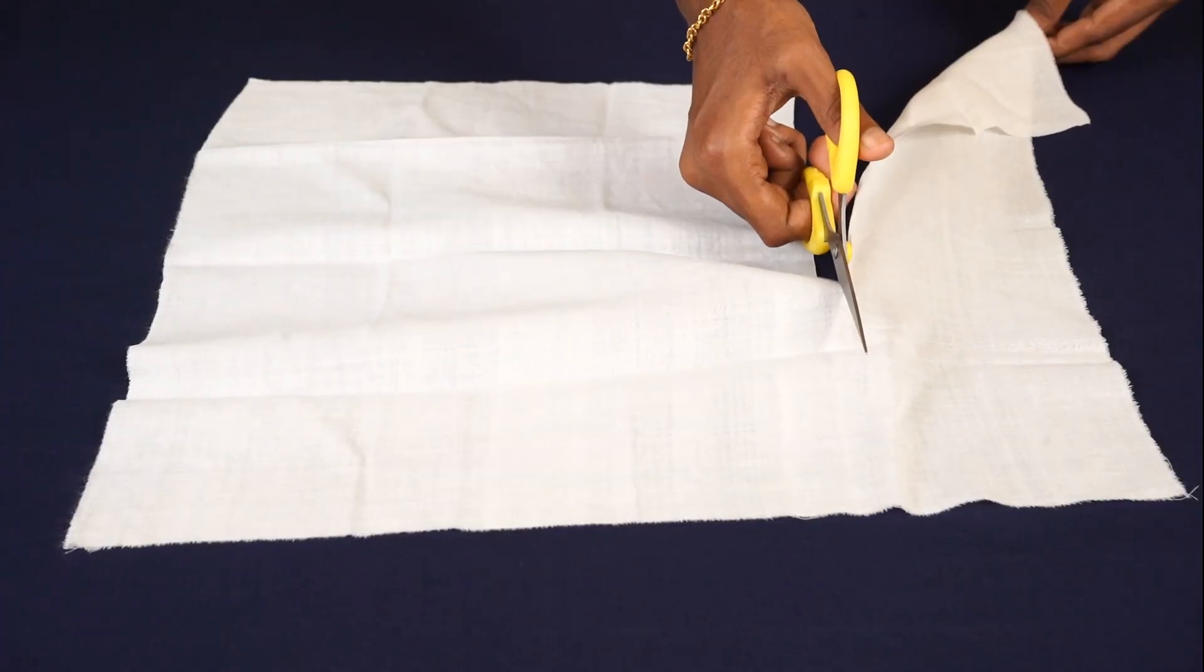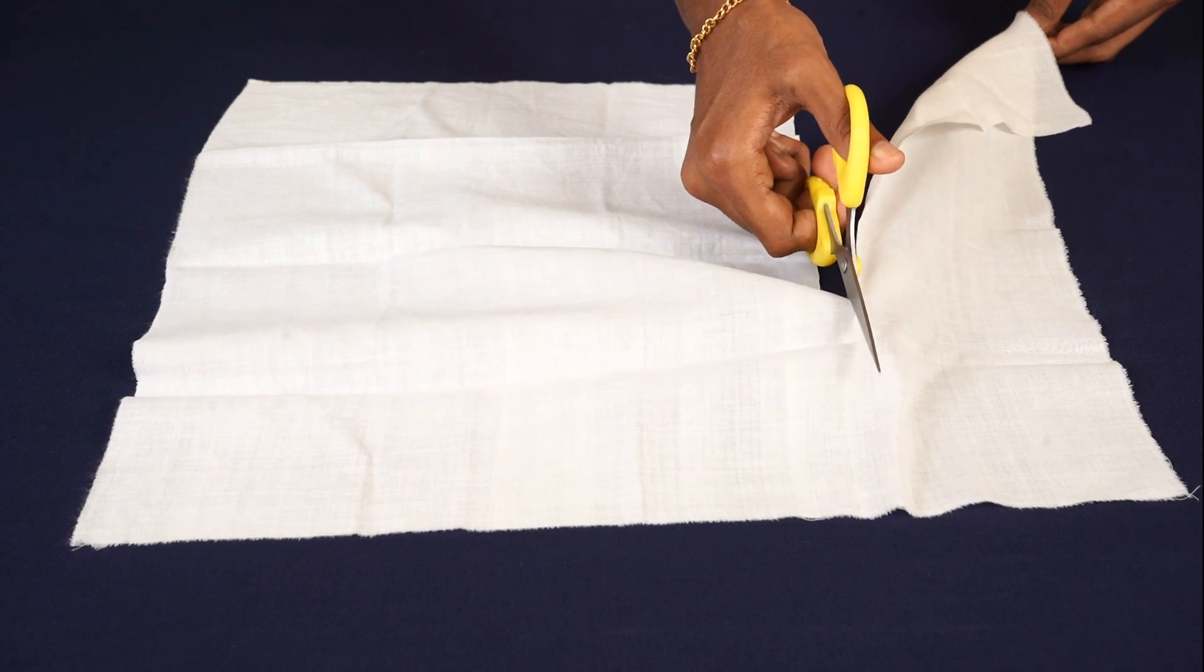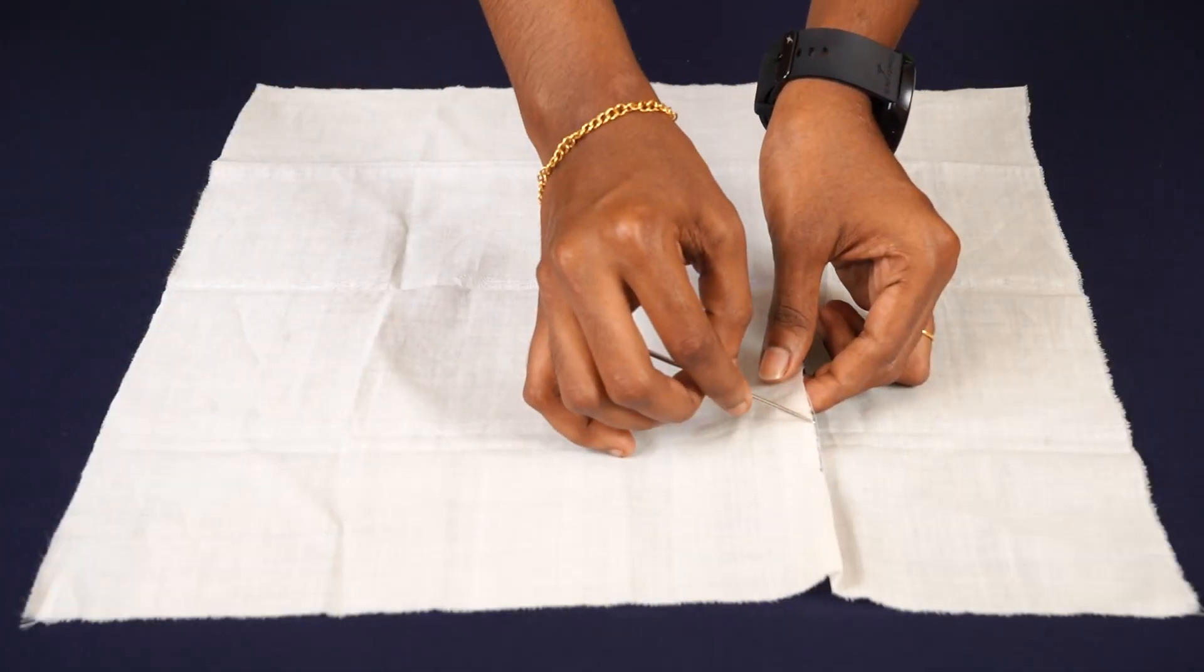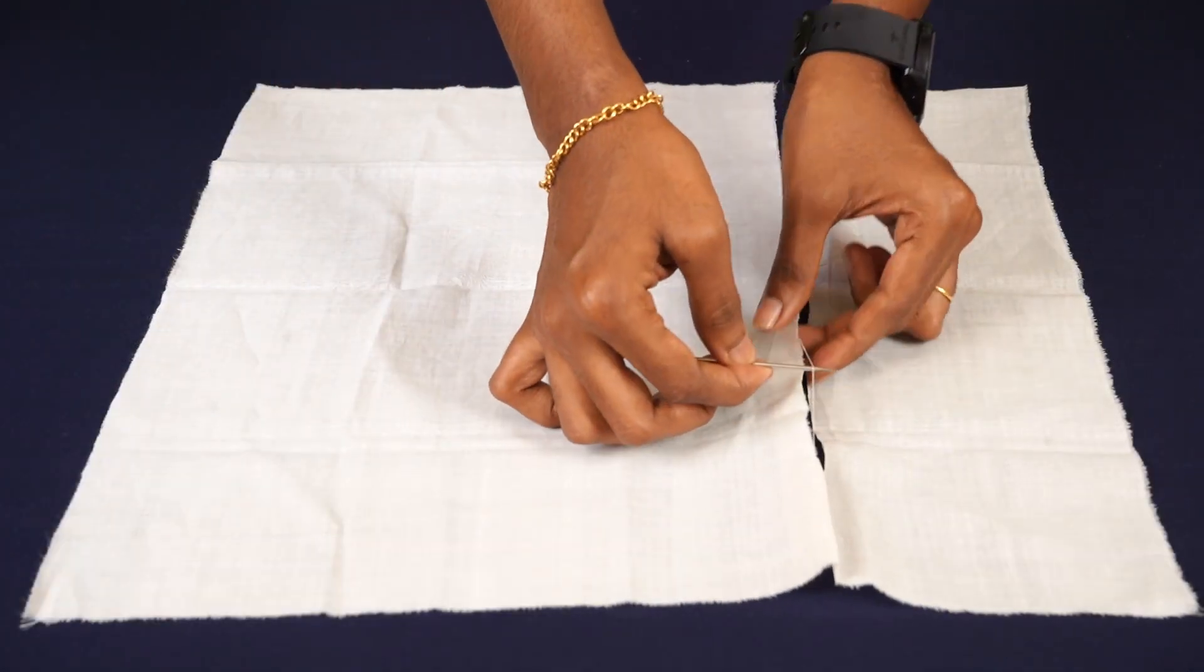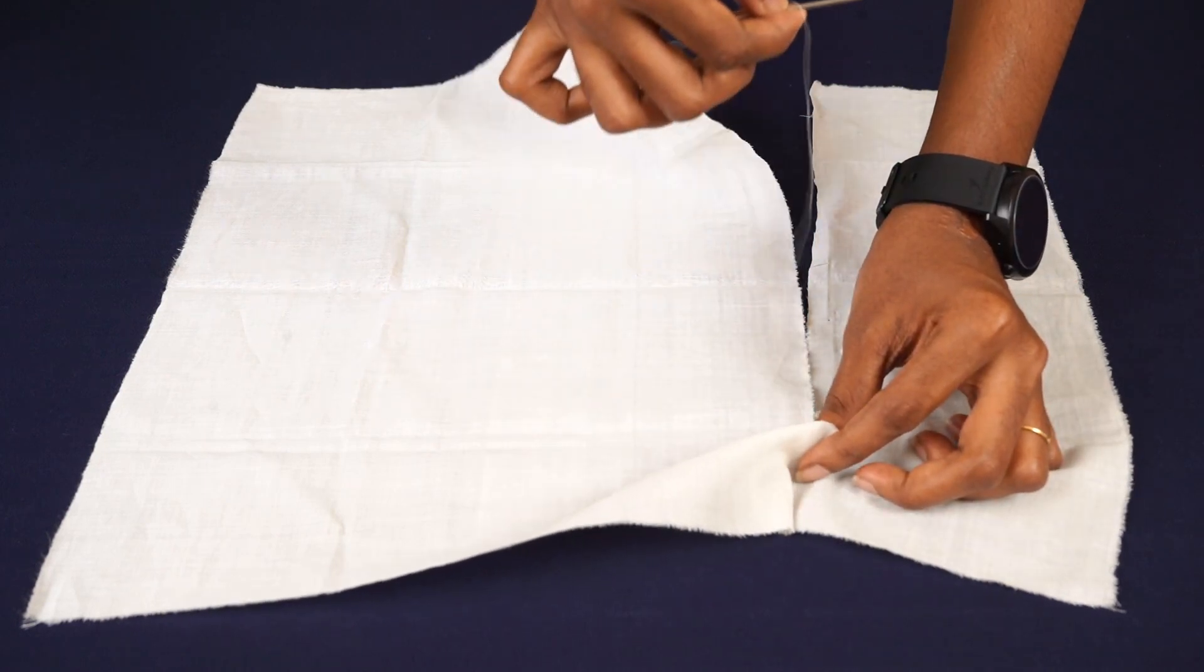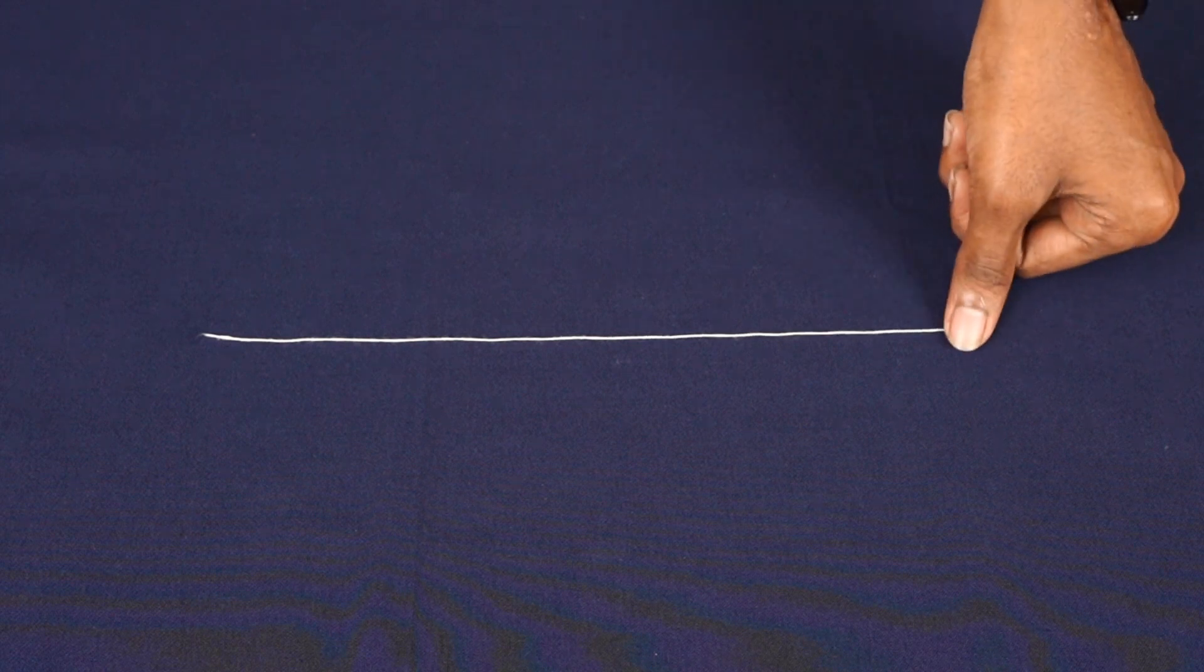With the help of scissors, cut the sides to loosen the network of threads. Pull out the threads or yarn from the cloth using a needle. Place this piece of yarn on the table. Now press one end of the yarn